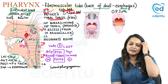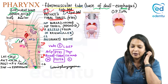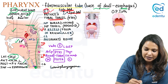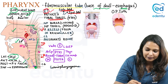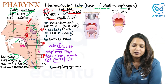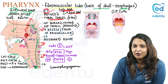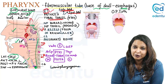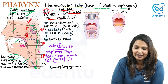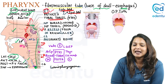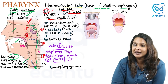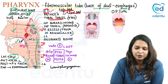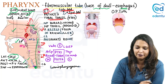From this elevation there are two folds extending: the salpingopalatine fold and the salpingopharyngeal fold. The word salpingus means tube. The salpingopharyngeal fold extends from the eustachian tube to the pharynx, and the salpingopalatine fold extends from the eustachian tube to the soft palate.